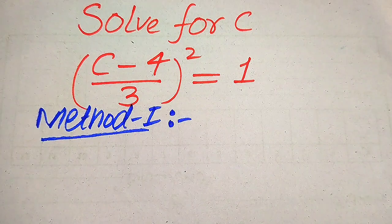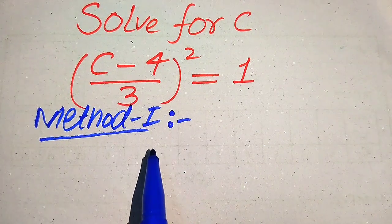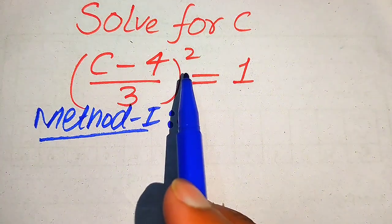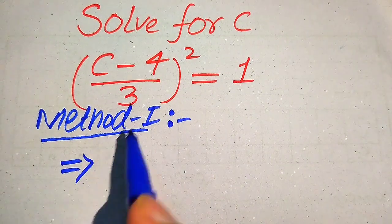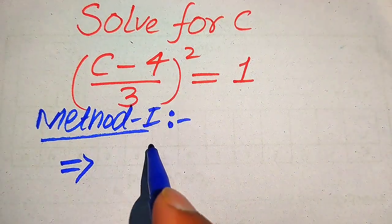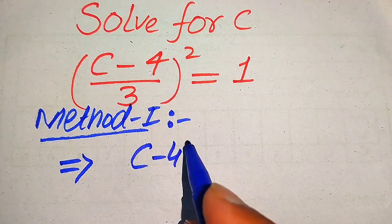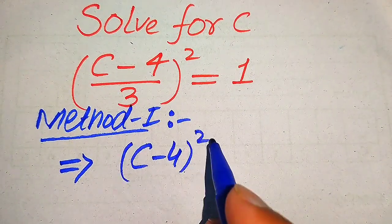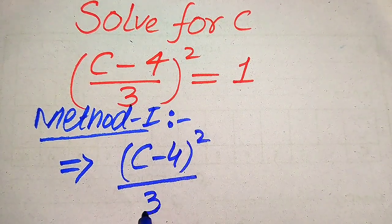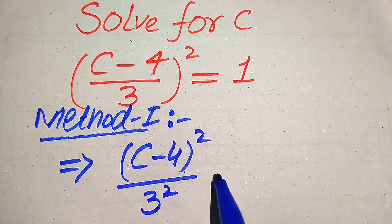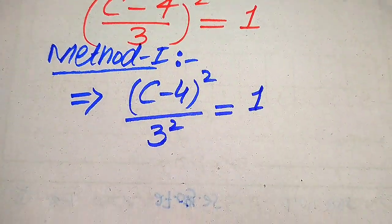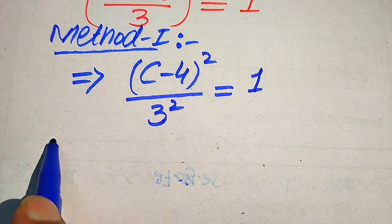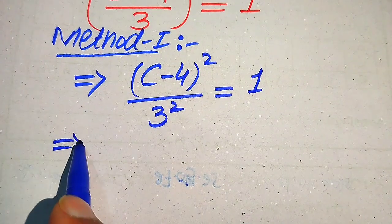Here we move towards our first method. In the first method, we break the square sign and apply it separately on both values. It will be written as (C minus 4) squared divided by 3 squared, and it is equals to 1.